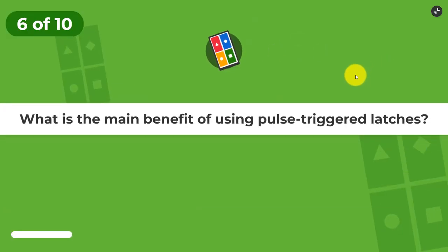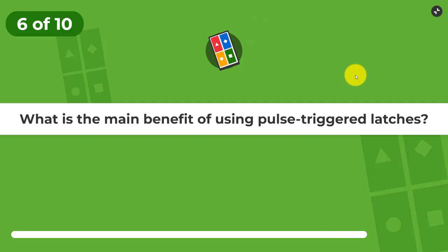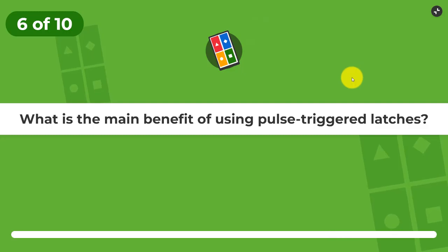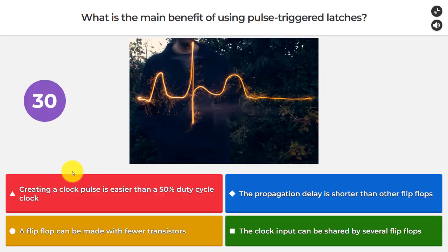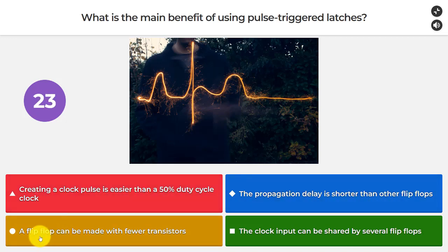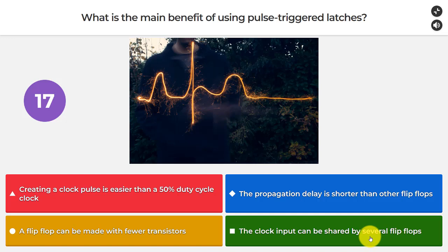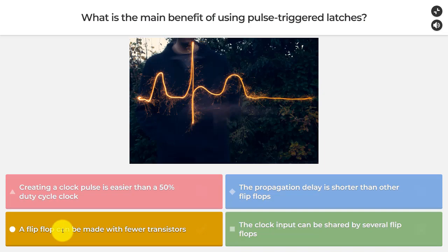Question number six: what is the main benefit of using pulse-triggered latches? Creating a clock pulse is easier than a 50% duty cycle clock. The propagation delay is shorter than other flip-flops. A flip-flop can be made with fewer transistors. Or, the clock input can be shared between several flip-flops. The answer is that a flip-flop can be made with fewer transistors.